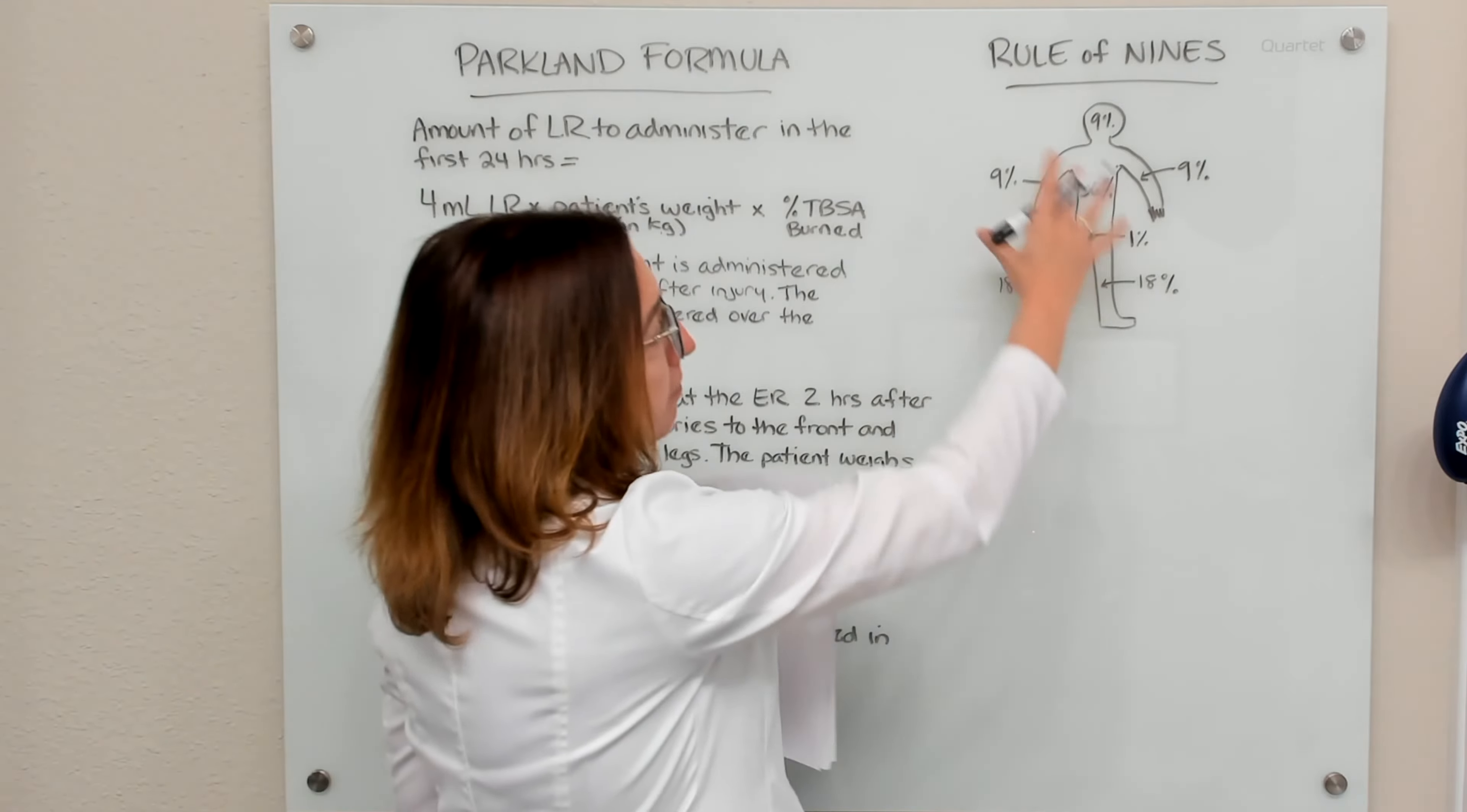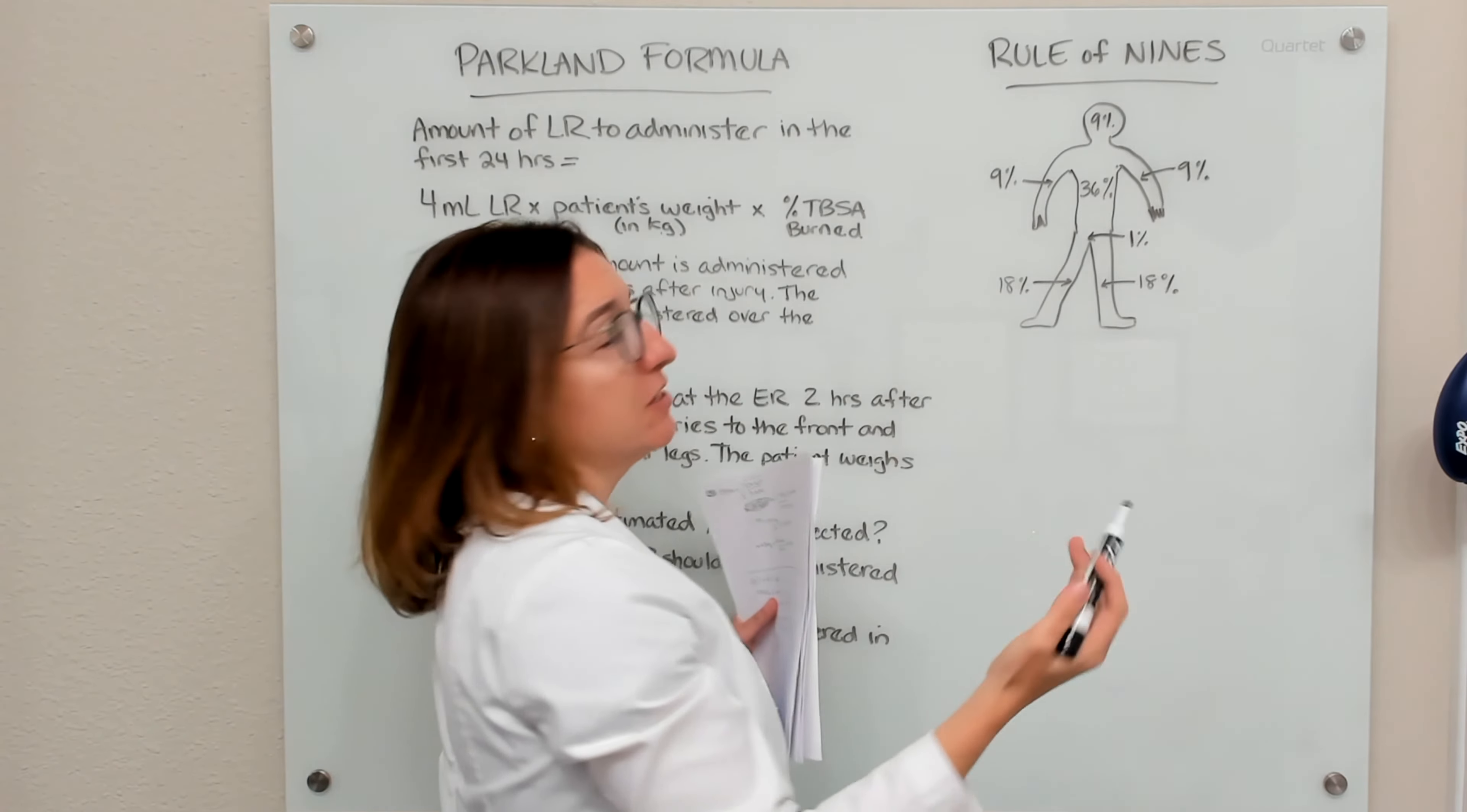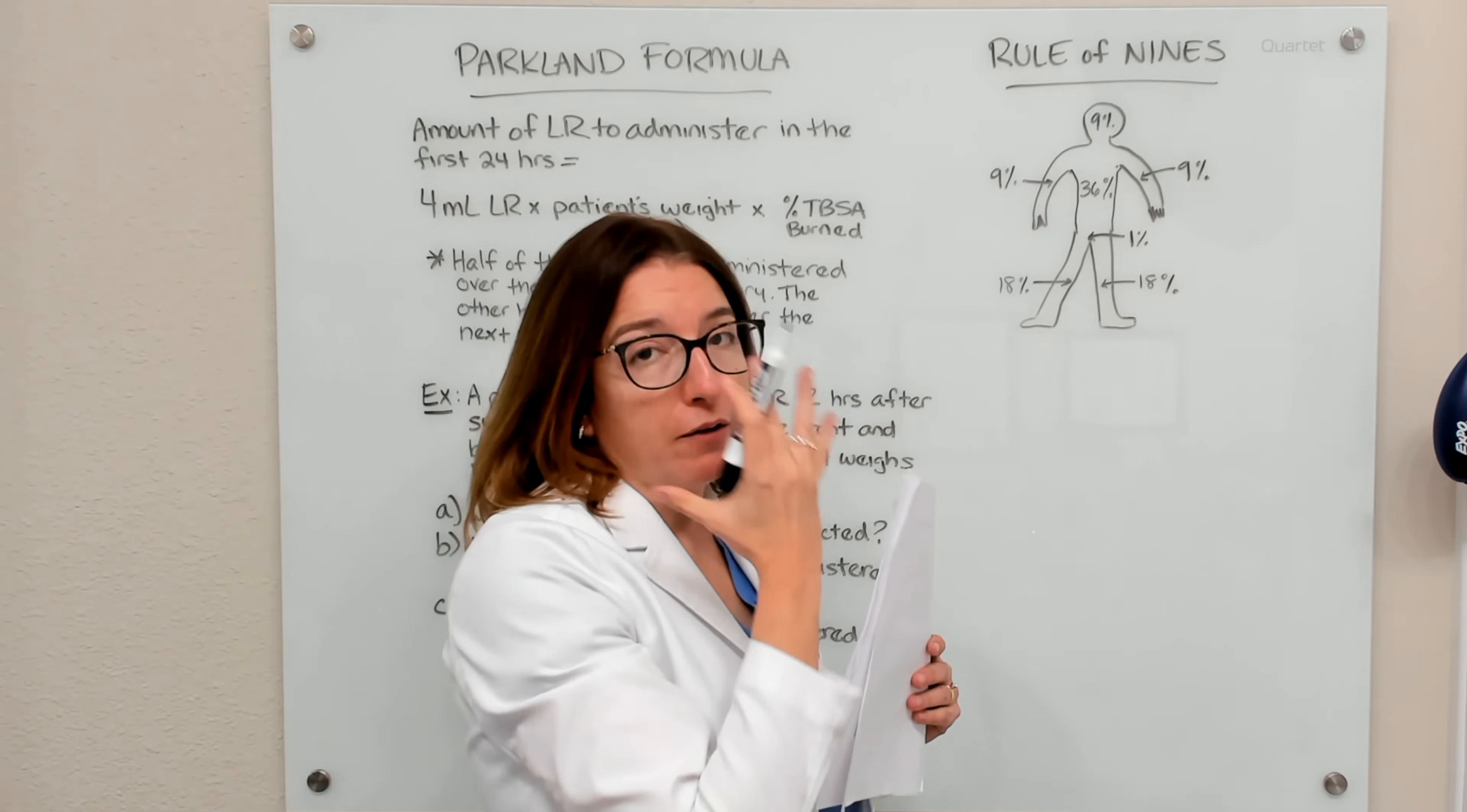So if you look at my little, very basic drawing of a person, you'll see that the percentages that are assigned to each body part are either nine percent or divisible by nine. So if the entire head is burned, that would be nine percent. If it was just the front of the head, then that would be 4.5 percent.